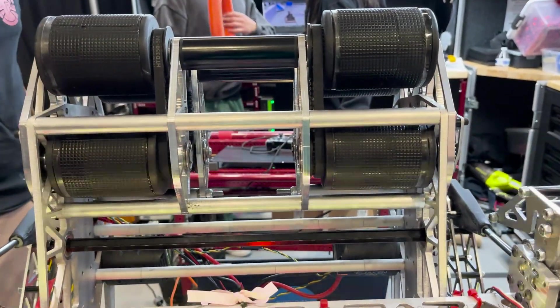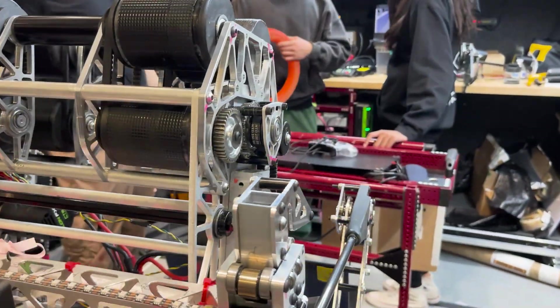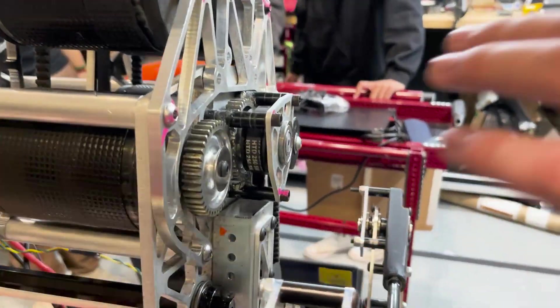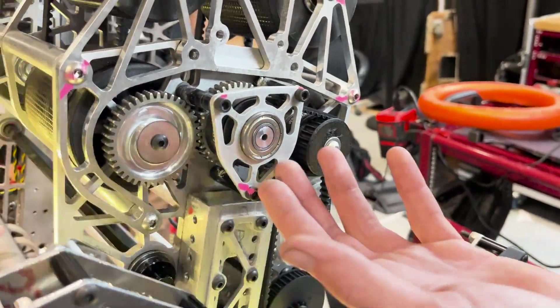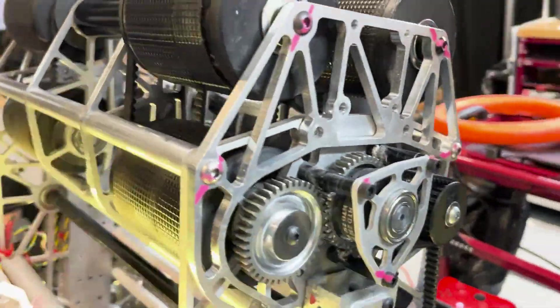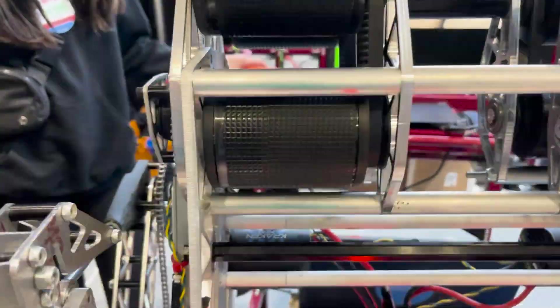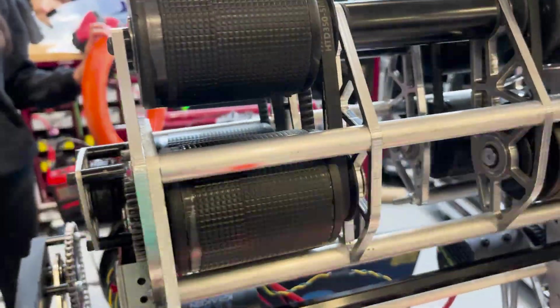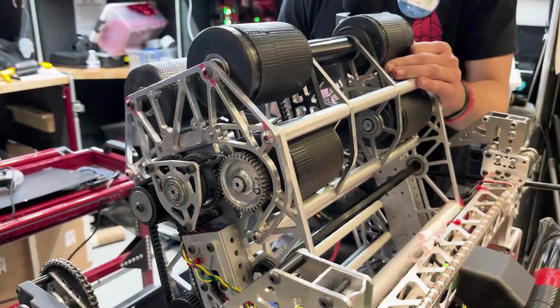One of the most important things for our shooting is the differential system we have. So we have one Kraken running each side individually and that allows us to put a lot of spin on the note keeping it very steady in the air. Yeah, so that really allows us to shoot very consistently from long distance, even the center line. We've been tuning our center line shots and we've got those down.